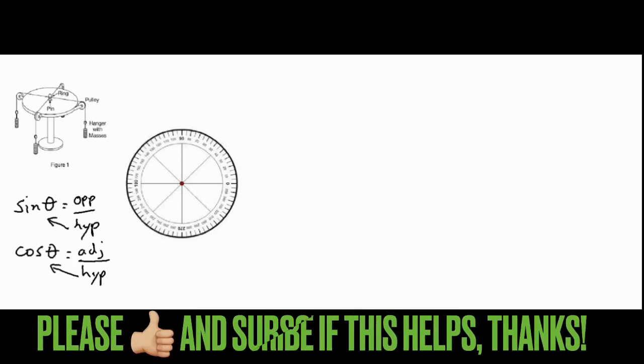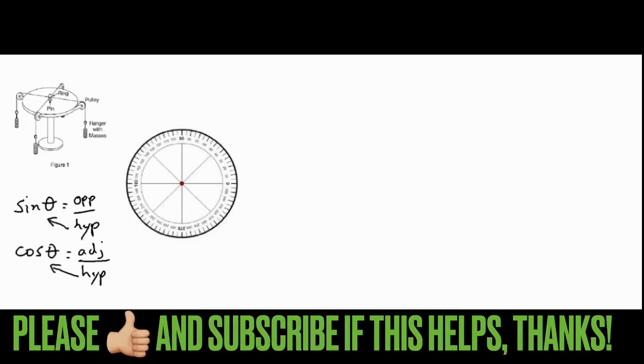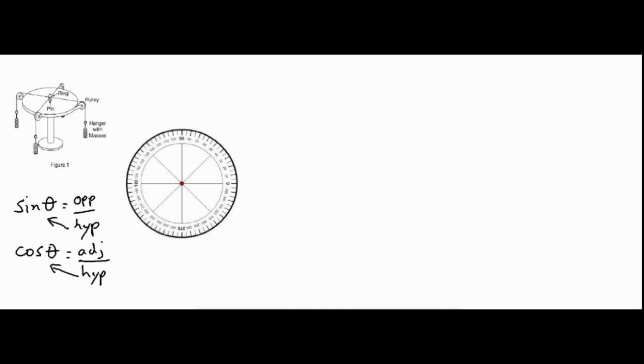The string is placed over the pulley and then has a mass hanging from the end of it. Typically the objective is to learn about vectors, masses, forces, and be able to set the force table in equilibrium so that this ring does not touch this pin in the middle, basically making all the forces balanced.